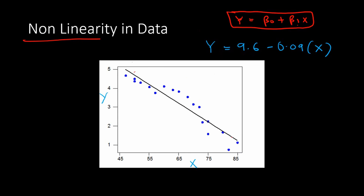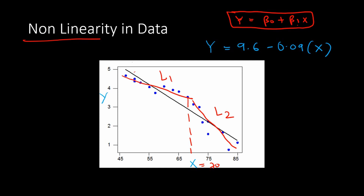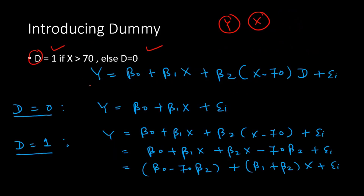We need to select a threshold value to divide the sample into different pieces. The pattern seems to be changing somewhere around x = 70. So we fit two regression lines: one called L1 for the first piece of data, and another called L2 for the second piece. Given that we have two pieces of data, it's called piecewise linear regression. Now let's see how we estimate these equations.